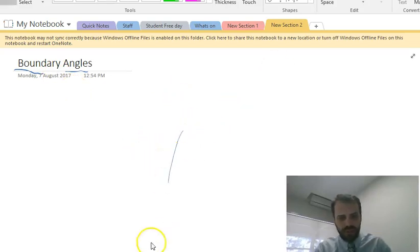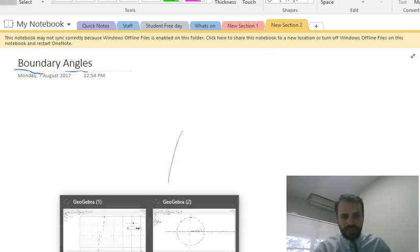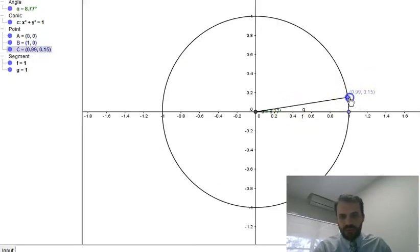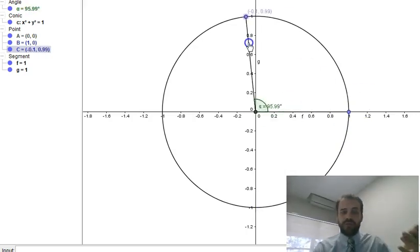So if I look at my unit circle here, let's open that up. What I mean is zero degrees, 90 degrees, 180 degrees, 270 degrees, and finally 360 degrees. So those are my four boundary angles.